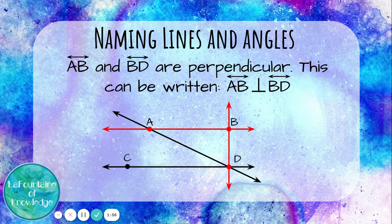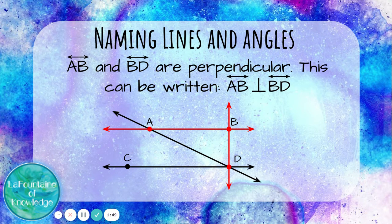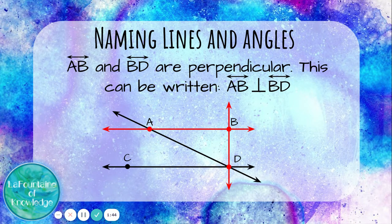Line AB and line BD are perpendicular. This can be written line AB is perpendicular to line BD. Notice the symbol looks like a pair of perpendicular lines forming right angles.